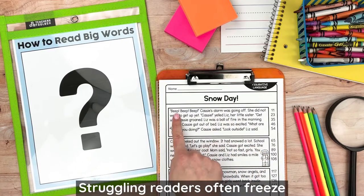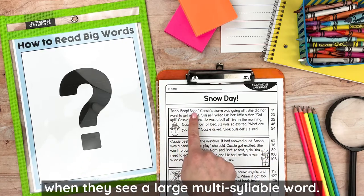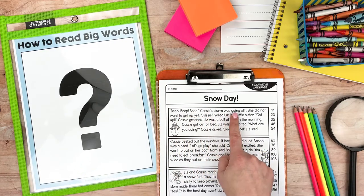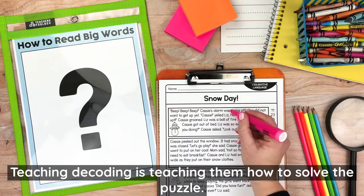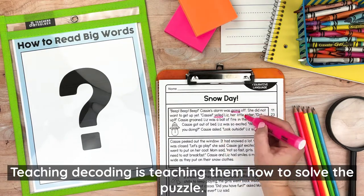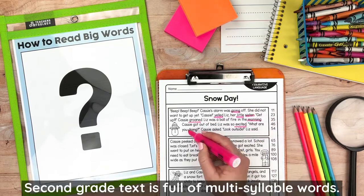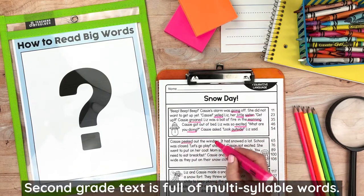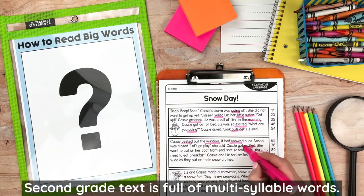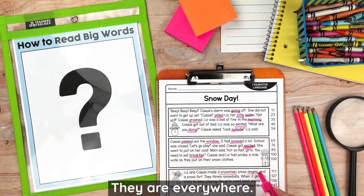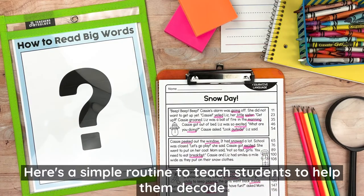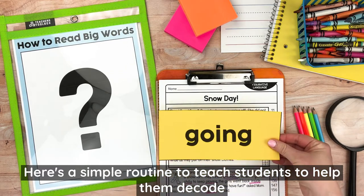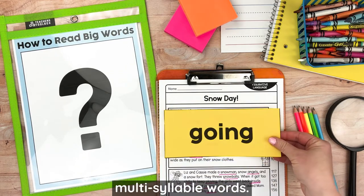Struggling readers often freeze when they see a large multi-syllable word. They see reading as a puzzle that is too difficult to solve. Teaching decoding is teaching them how to solve the puzzle. Second grade text is full of multi-syllable words — they are everywhere. Here's a simple routine to teach your students to help them decode multi-syllable words.